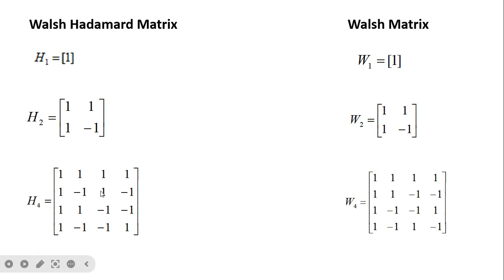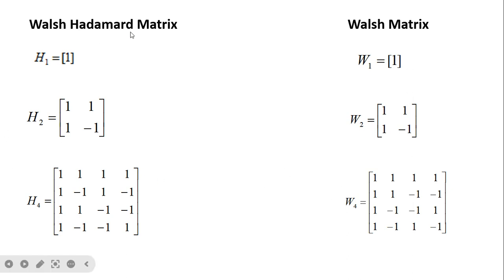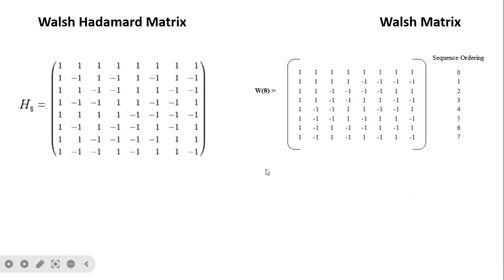For the last row there is a continuous change: 1 to -1, -1 to 1, and 1 to -1. So positive to negative is one change, negative to positive is the second change, and positive to negative is the third change — three sign changes. In this way we obtain the Walsh transform from the Walsh-Hadamard matrix such that each row is in increasing order of sign changes.